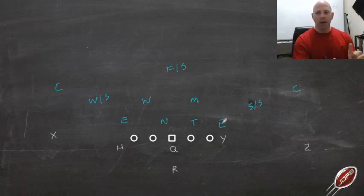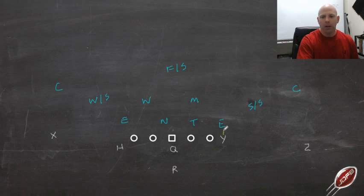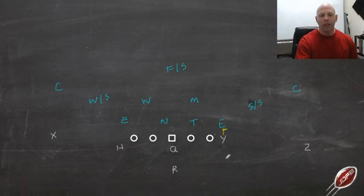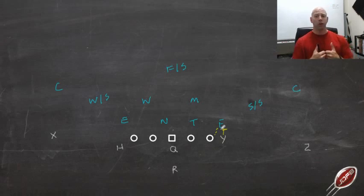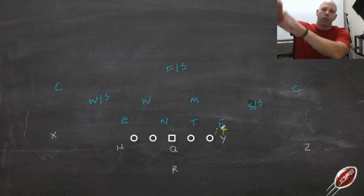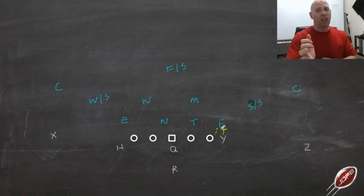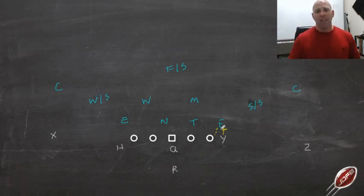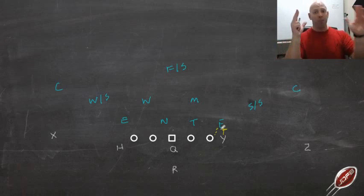If he feels the pressure from that tight end — a base block, scoop, or a hard reach — he's not worried about what the visual key does; he's got to beat the man in front of him. If he doesn't feel that pressure — if he gets some kind of an arc release — these are the things that your 7-technique is really going to have a problem with if he's not able to see his visual key.